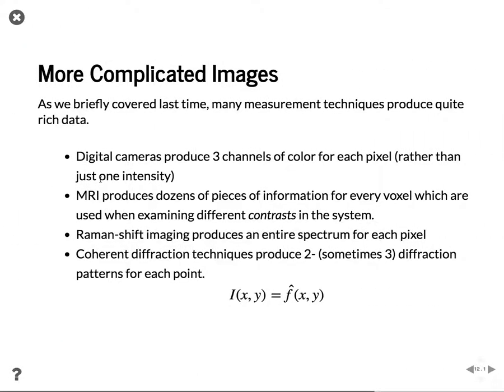Looking at more complicated images: many measurement techniques produce quite rich data. Digital cameras produce three channels of color. MRI produces dozens of pieces of information with each voxel — depending on what sequences you use and how you post-process the data, you can end up with an entire tensor in diffusion tensor imaging at each point. You can also do MR spectroscopy where you end up with an entire spectrum at each point. So if you're dealing with a 3D image and a spectrum at each point, you have quite a bit of data to analyze.